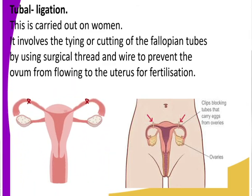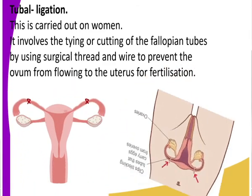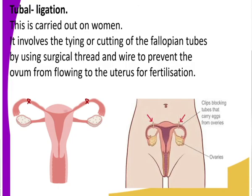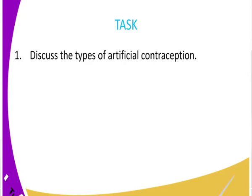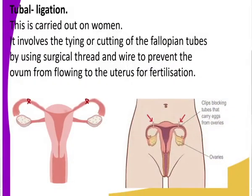Let me show you the diagram - that is tubal ligation. You can see the fallopian tubes have been tied to prevent movement of the ovum and to prevent the sperm from reaching the ovum in the fallopian tube.